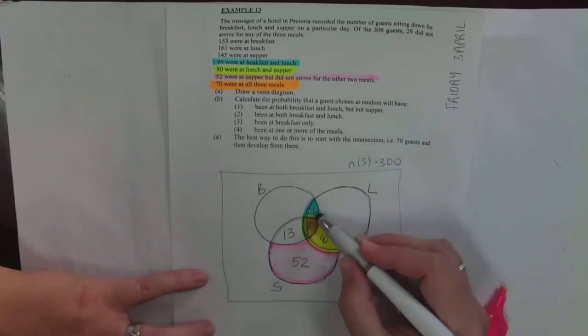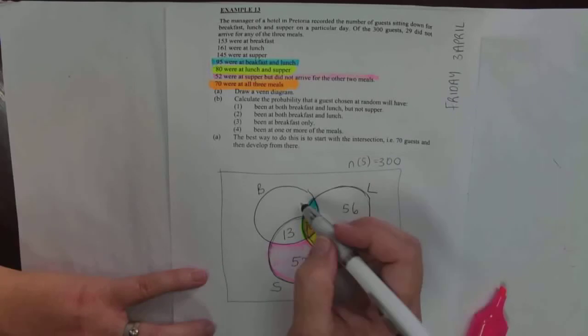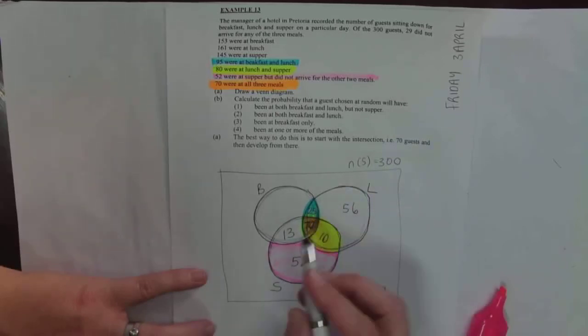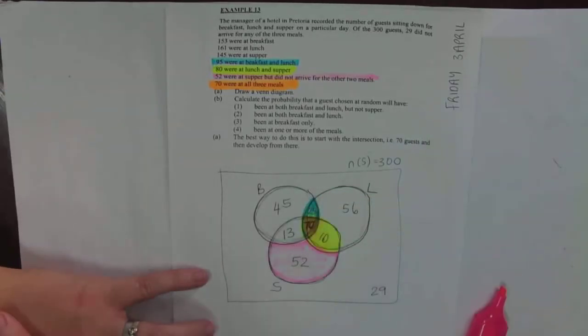161 were at lunch, so that entire event there must add up to 161. So I've got 80, 105 already, so I'm missing 56 of them. And 153 were at breakfast, so if I take 153 minus 25 minus 70 minus 13, I get 45 at breakfast alone.